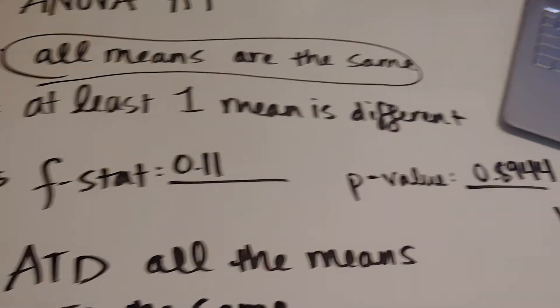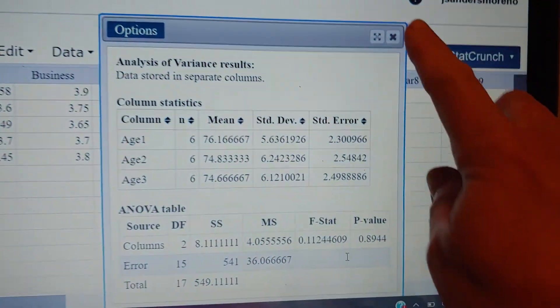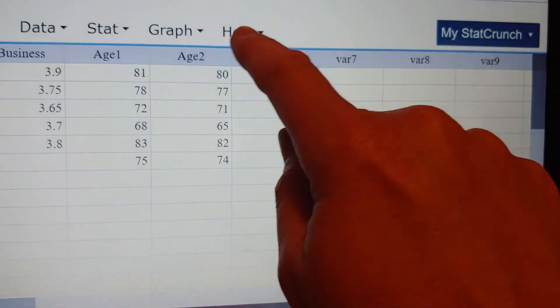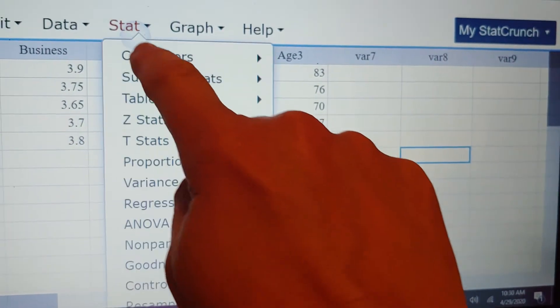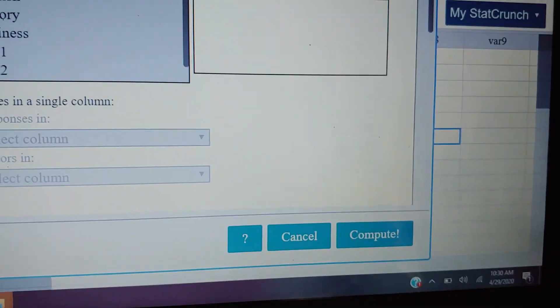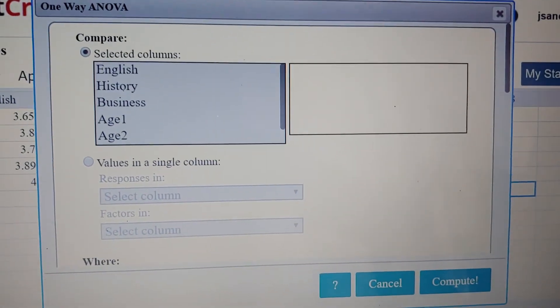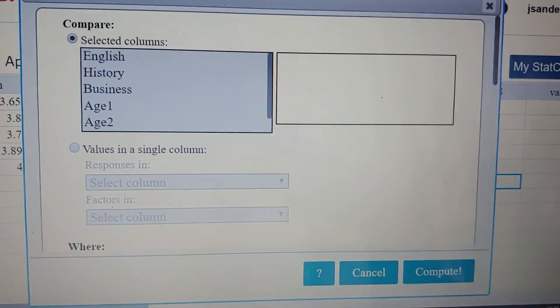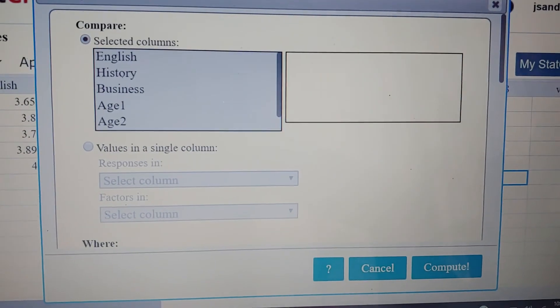In fact, that was so fast, maybe I should show you one more time the StatCrunch that you would do. So STAT, ANOVA, one way, highlight the three ages, and hit compute. All right. I hope you have success with ANOVA. Thank you so much.